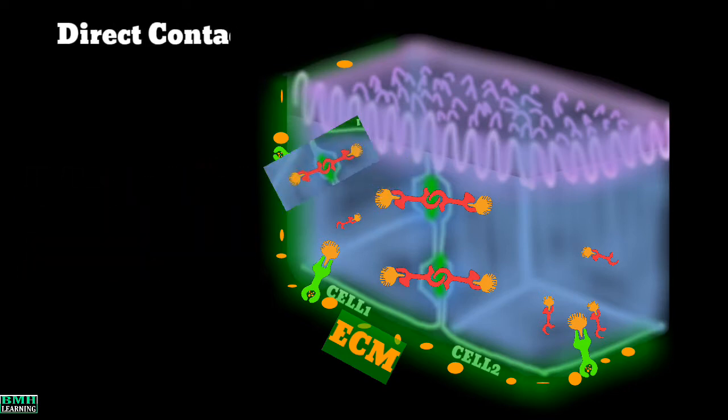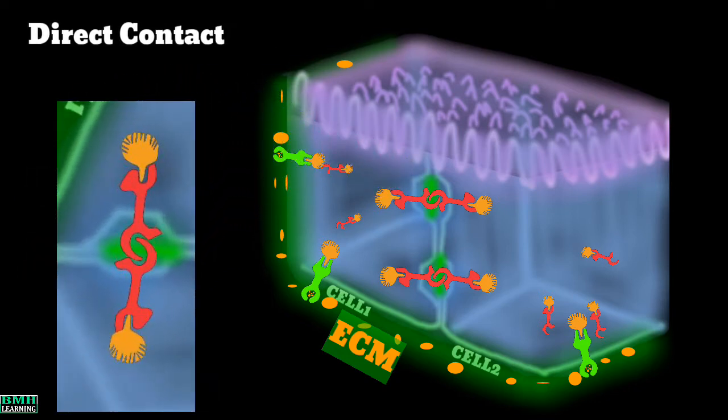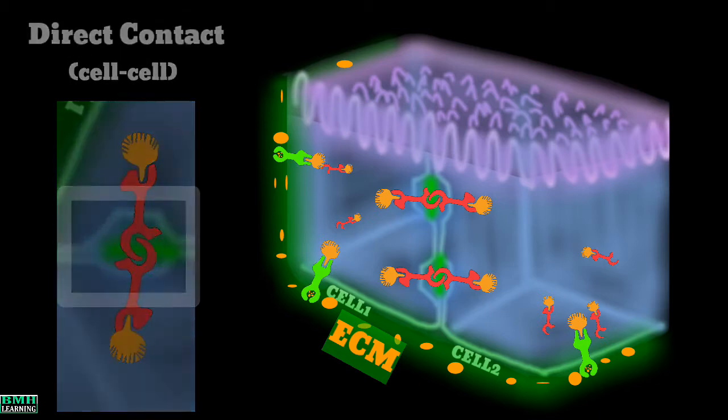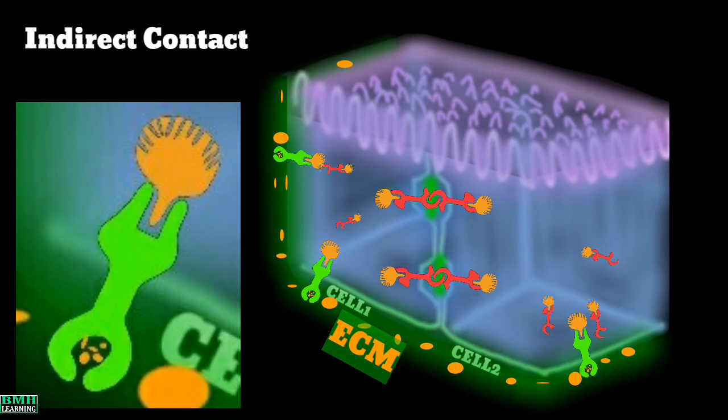First is direct contact. It can attach one cell to the other cell, so this is cell-cell adhesion. Second, we have indirect contact. These junctions also connect the cells to the extracellular environment and it's called cell-matrix adhesion.